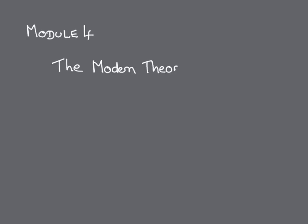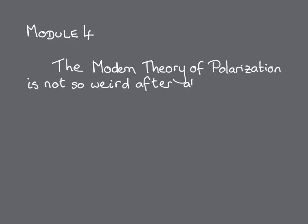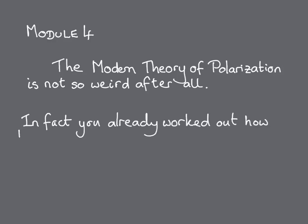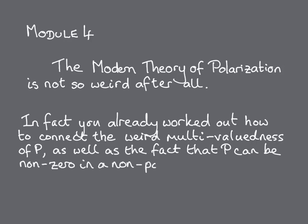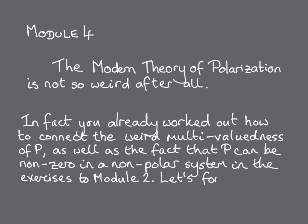In this module, we will revisit the two weird properties of the polarization that we identified earlier. First, that the polarization is multi-valued, and second, that the polarization in a non-polar system can be non-zero. By the end of the module, we will have convinced ourselves that these properties are actually not so weird after all. In fact, you should already have suspected this when you completed the exercises from Module 2, and here we will formalize what you found.